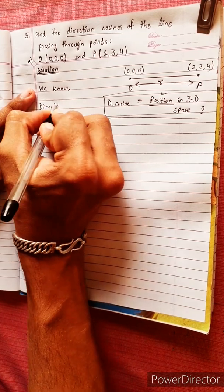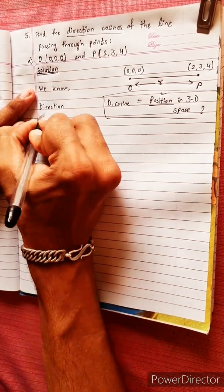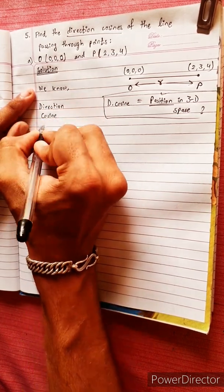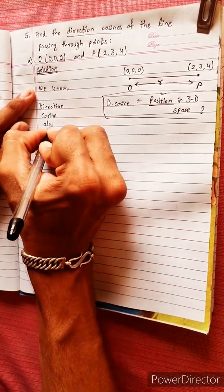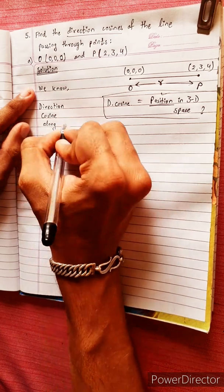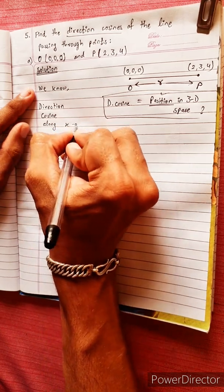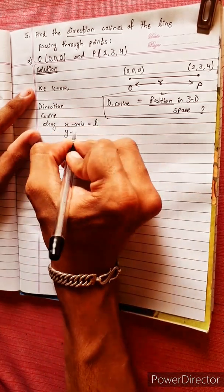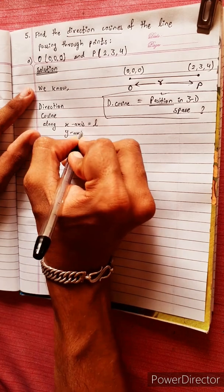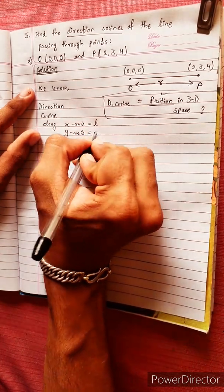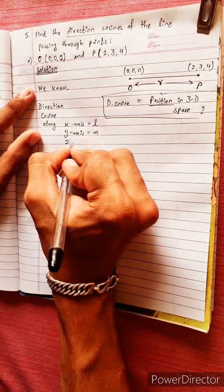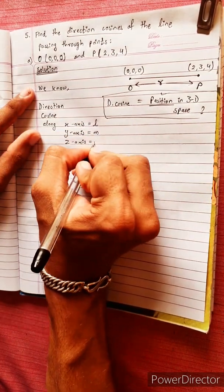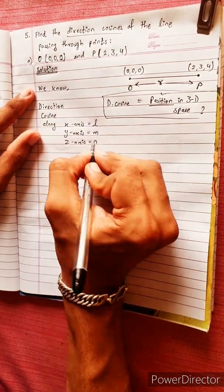The direction cosine along the X-axis is L. The direction cosine along the Y-axis is M. The direction cosine along the Z-axis is N. So we have L, M, N.